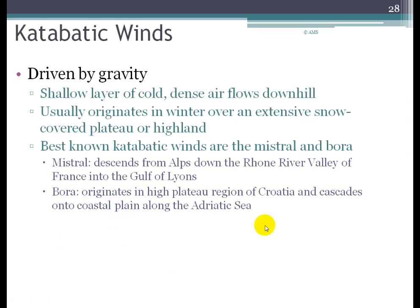Katabatic winds are driven by gravity. A shallow layer of cold, dense air naturally wants to flow downhill, and if a pressure system encourages that movement, it pushes these katabatic winds down steep mountains from high elevations. Examples include the Mistral, which flows down the Rhone River Valley in France from the high Alps, and the Bora, which originates over the high plateau region of Croatia and flows down onto the coastal plain by the Adriatic Sea.